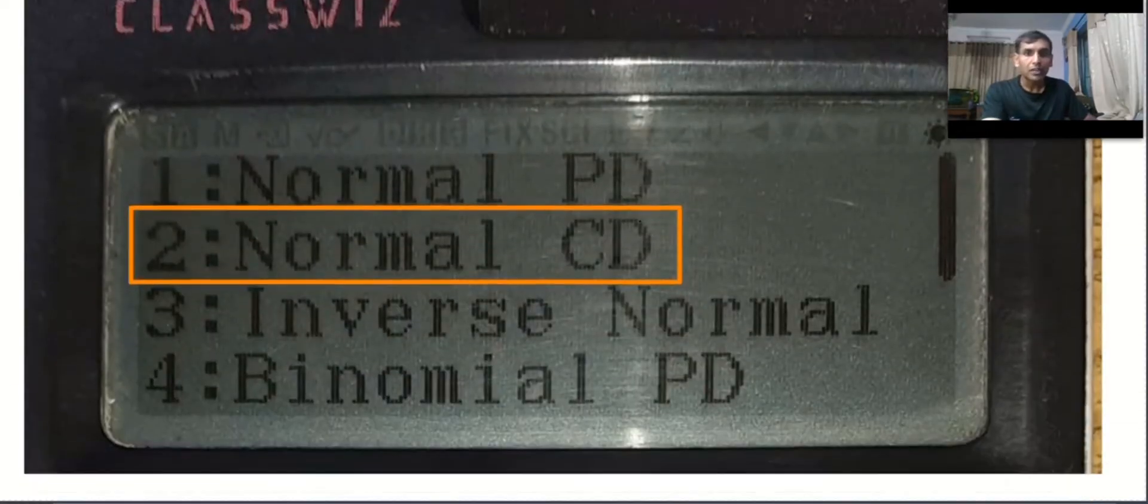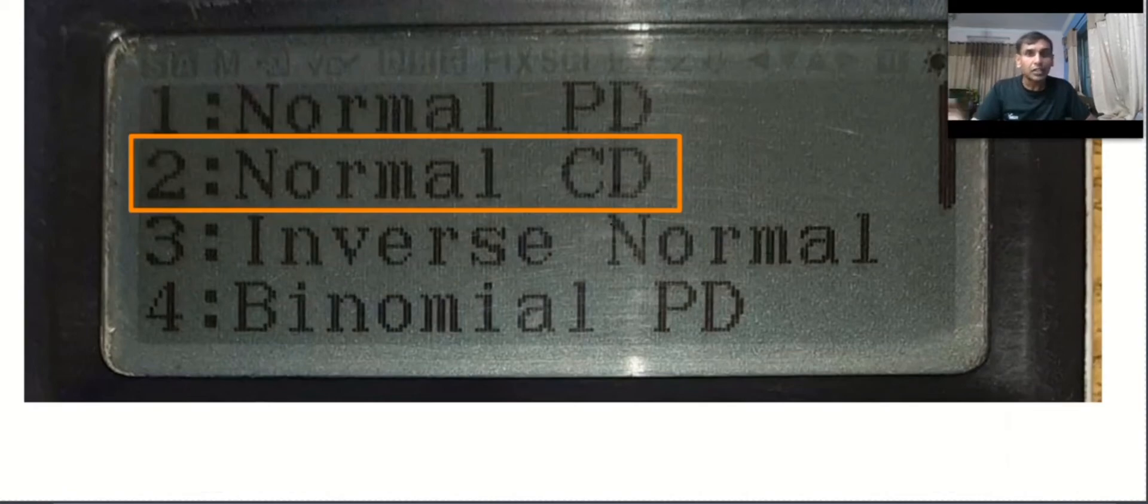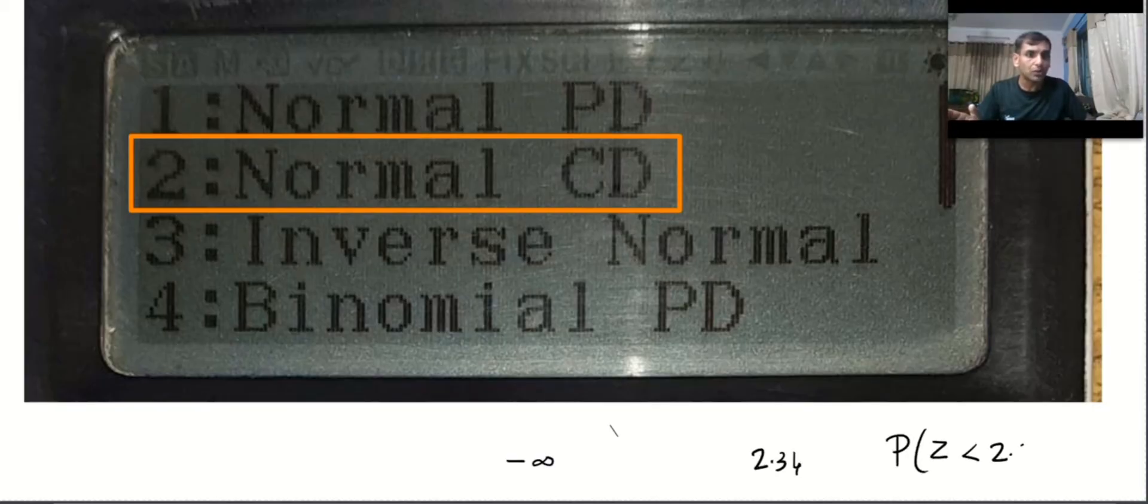Remember we want the value probability from minus infinity to 2.34. That means we want the cumulative distribution. The word cumulative comes from the word accumulation. That means you have to accumulate, you have to collect all the probability from minus infinity to 2.34. That is the meaning of saying probability z less than 2.34.